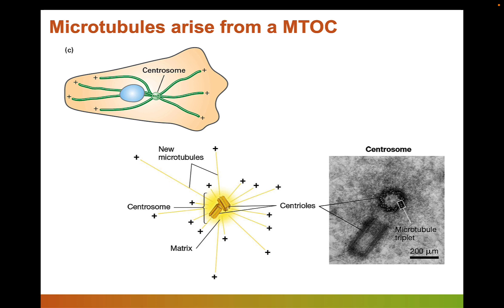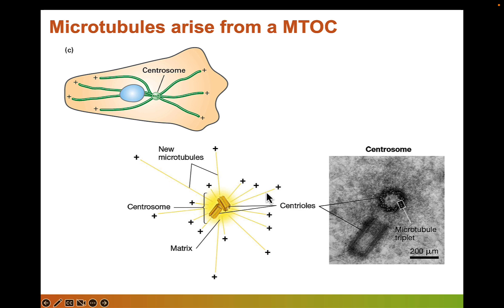Microtubules must arise from a microtubule organizing center, or MTOC. In animal cells, the MTOC is called the centrosome. If we zoom in on the centrosome, we would see a bundle of microtubules called centrioles. From the centrioles we form the centrosome, and from the centrosome our microtubules grow outward toward the periphery of the cell. It's good to keep track of these terms now because they will come up again when we talk about cell division.